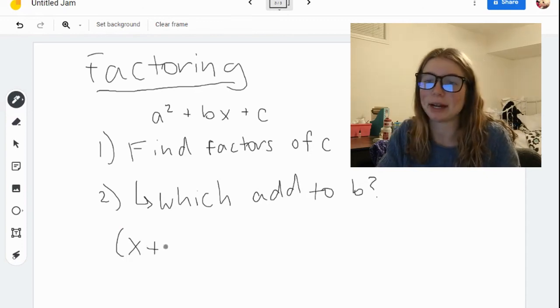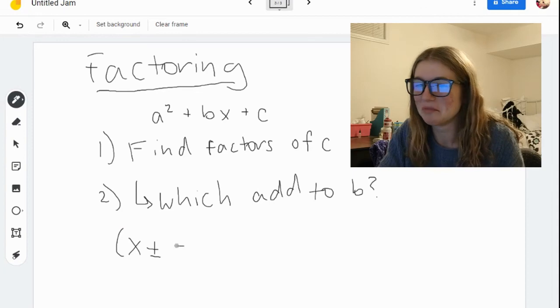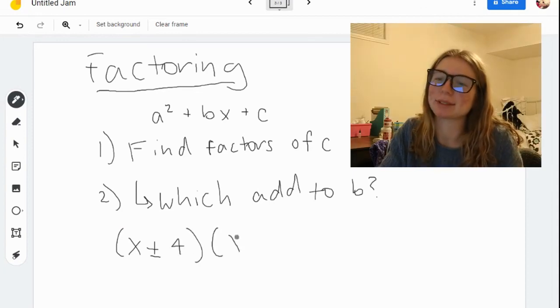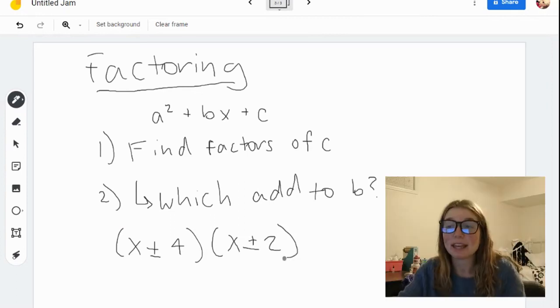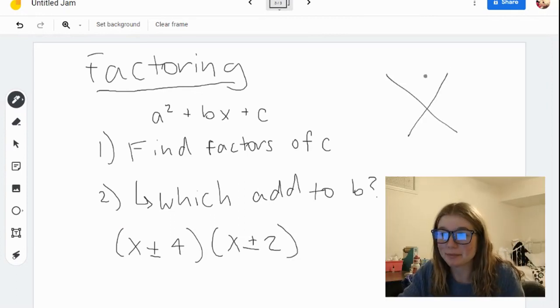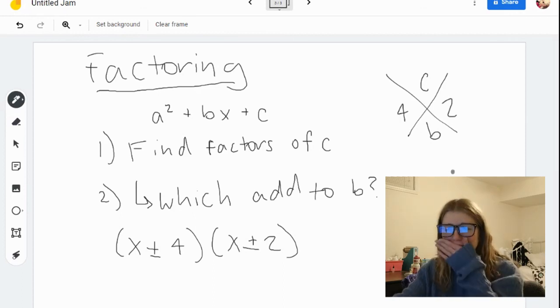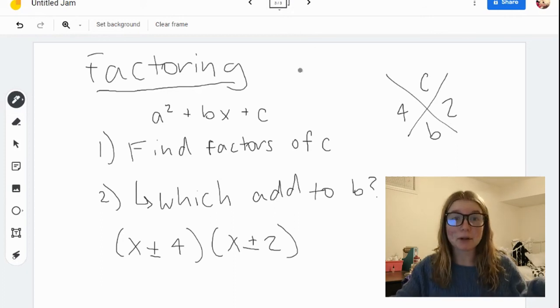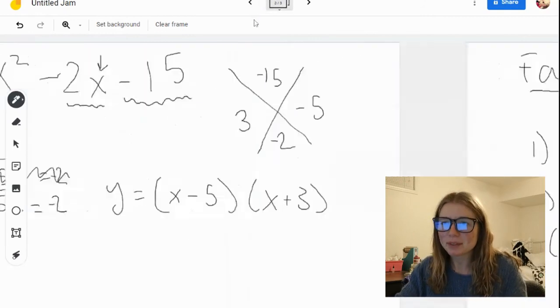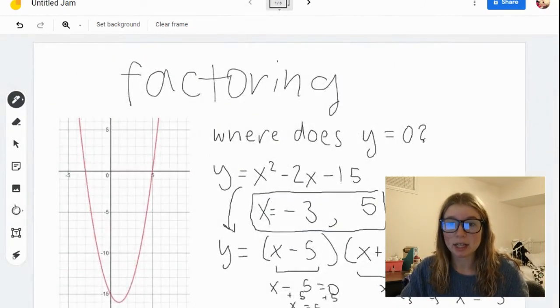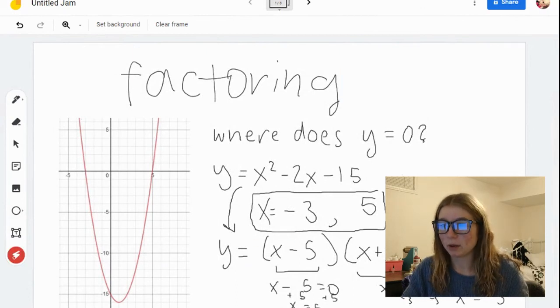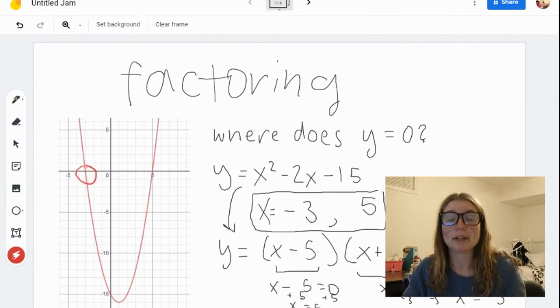If the magic x method helps you, then definitely go ahead and use it. If you find that something else works better for you, go ahead and use that. Remember, these values that you're finding, if you find out where they equal 0, that's going to be where your graph intersects the x-axis or where your graph evaluates to 0.